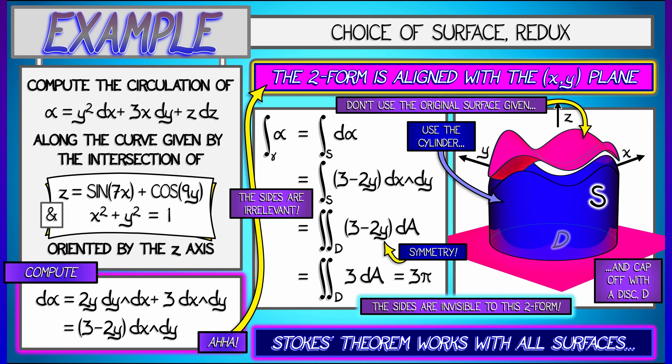This is a good example for seeing how you should be creative in choosing a surface to bound a curve when it's a Stokes theorem problem. Be sure to compute d alpha and see what surfaces work well with it. That's the lesson of this example.